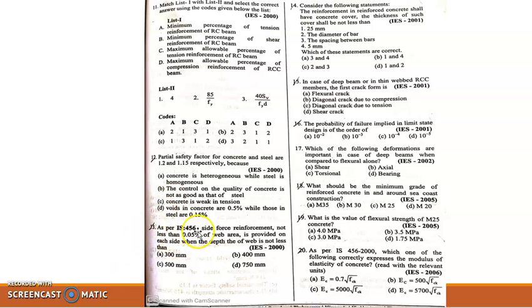Moving to 13th question: As per IS 456, side face reinforcement not less than 0.05 percentage web area is provided on each side when the depth of the web is not less than 750mm. Option A is the correct answer.